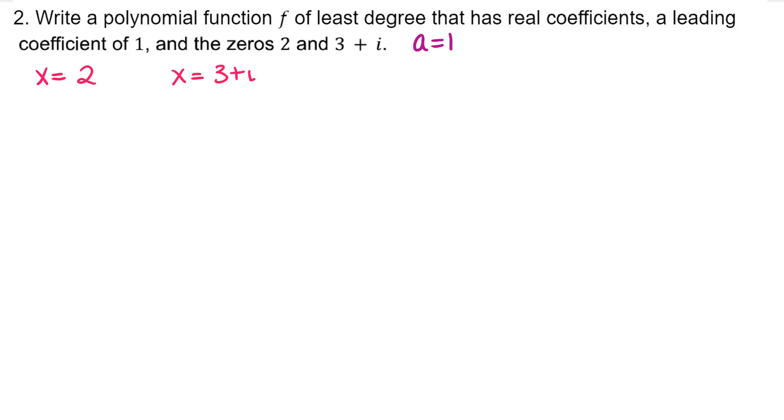We're going to do the same process we did for number 1, but this time we'll use the complex conjugates theorem. The complex conjugates theorem states that if 3 plus i is a zero, then 3 minus i, its conjugate, is also a zero of f.